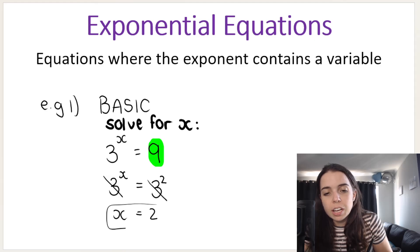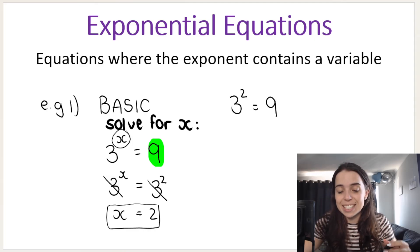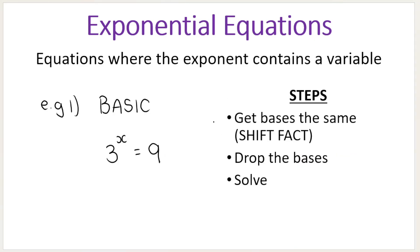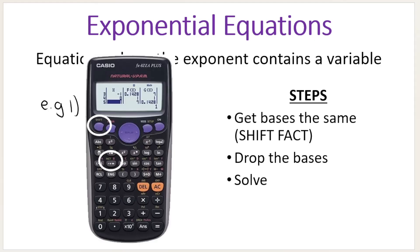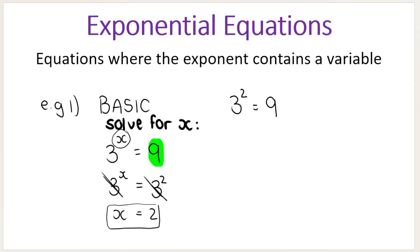Think about it — is this true? If I take two and put it in the place of x, so three to the power of two, does it give me nine? Yes, indeed it does. So our rule is: get the bases the same. A little trick you can do on your calculator is to use shift-fact. You type the number in — for example nine — press equals, then press the shift button, then press the button that says 'fact' at the top. It will give you the prime base form, like three to the power of two. This is useful for bigger numbers where you may not know the prime base form. Once the bases are the same, we are allowed to drop the base and then continue to solve.